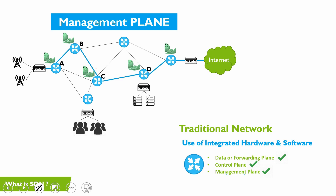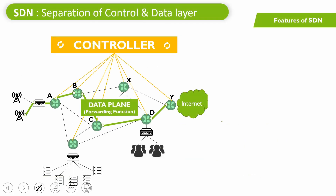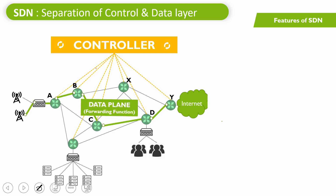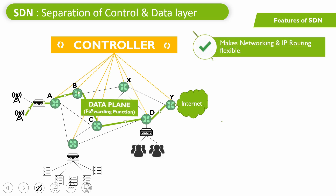Now let's see how SDN simplifies life. This is an SDN-powered network where the controller or brain of the network is separated from the data or forwarding plane. SDN stands for Software Defined Networking — an emerging architecture that is fully programmable, dynamic, manageable, cost-effective, and adaptable, ideal for meeting dynamic and random requirements. There are four key principles of SDN.